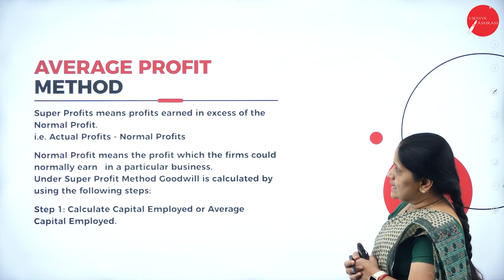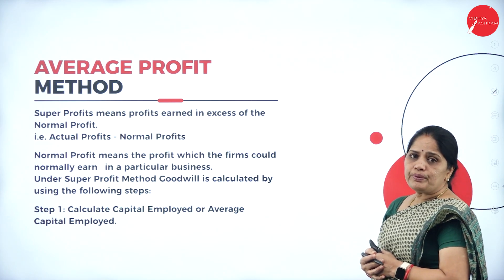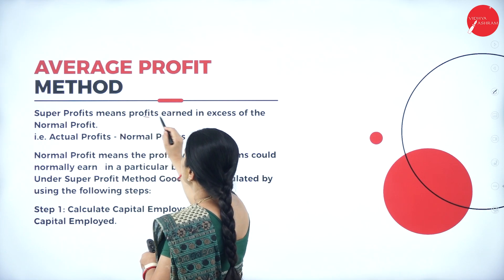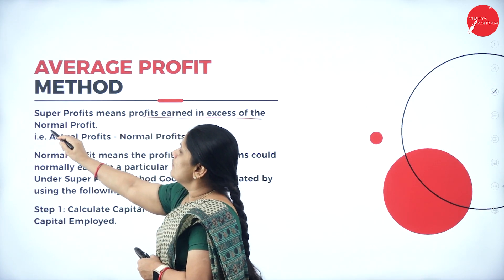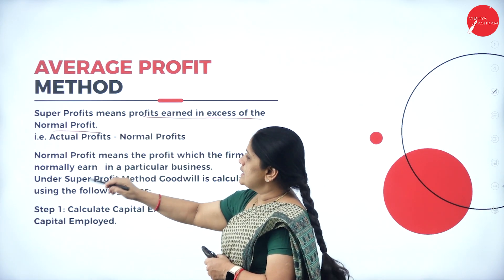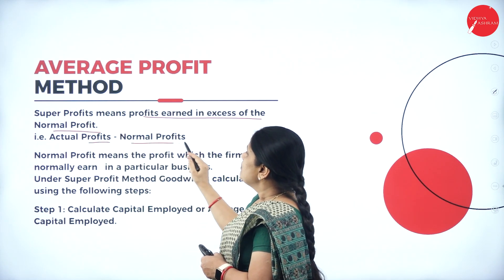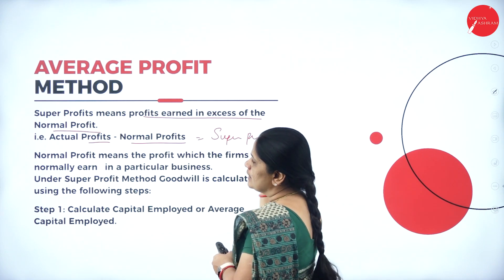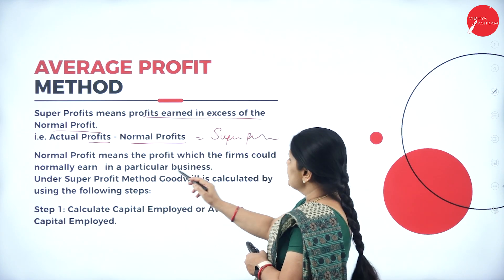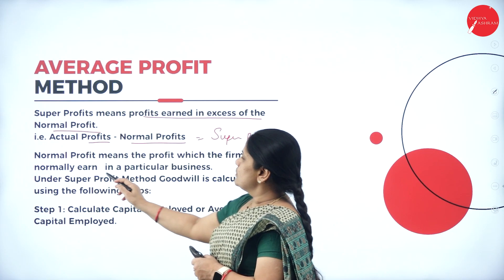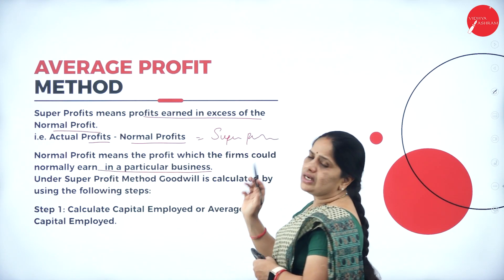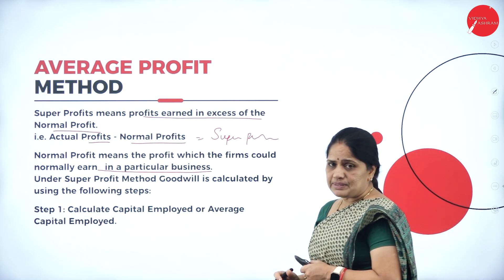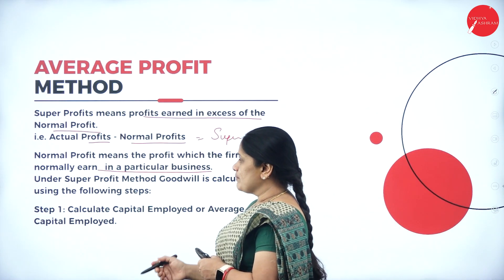Next we have the super profits method. Super profit means the profits earned in excess of normal profit — that is, actual profit minus normal profit gives the super profit. Normal profit means the profit which firms could normally earn in a particular business.